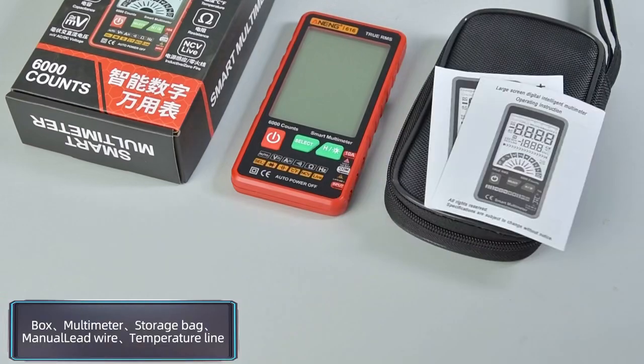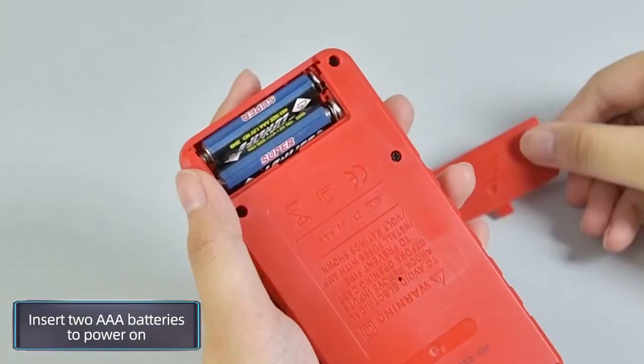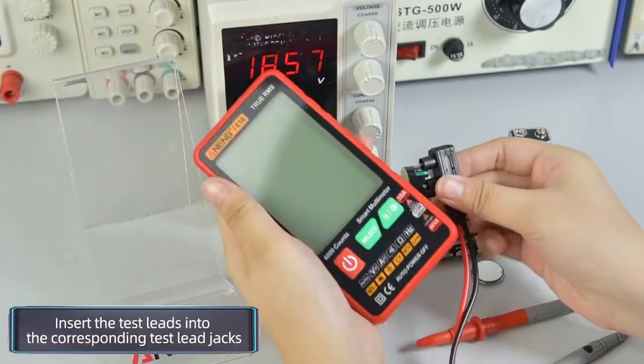High configuration multimeter. Insert two AA batteries to power on. Insert test leads into the corresponding test lead jacks.